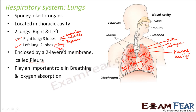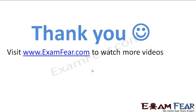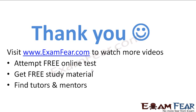The three lobes of the right lung are the superior, middle, and inferior lobes, and the two lobes of the left lung are the superior and inferior lobes. Please visit examfear.com to watch more videos, attempt free online tests, get free study material, and find tutors and mentors.